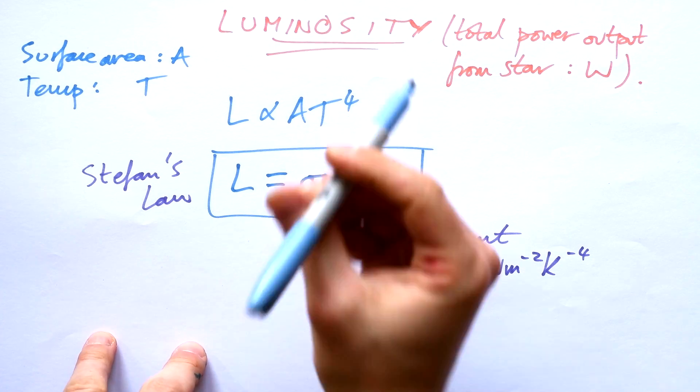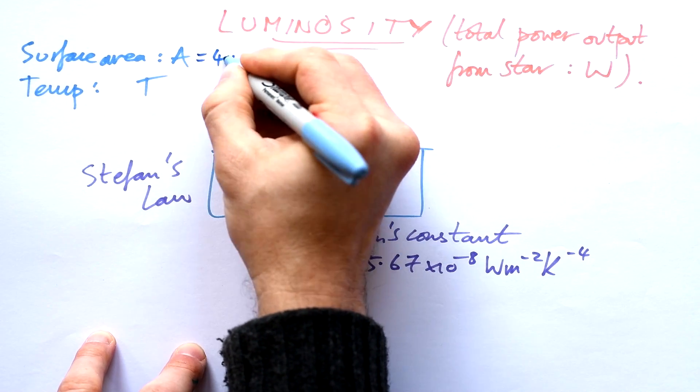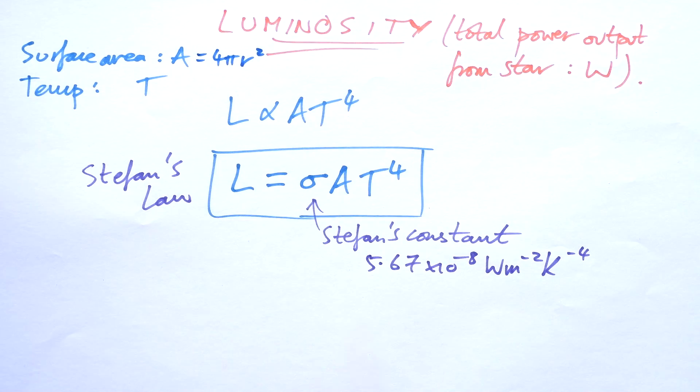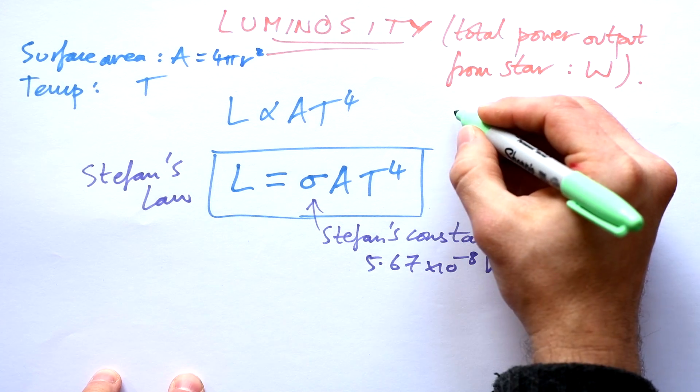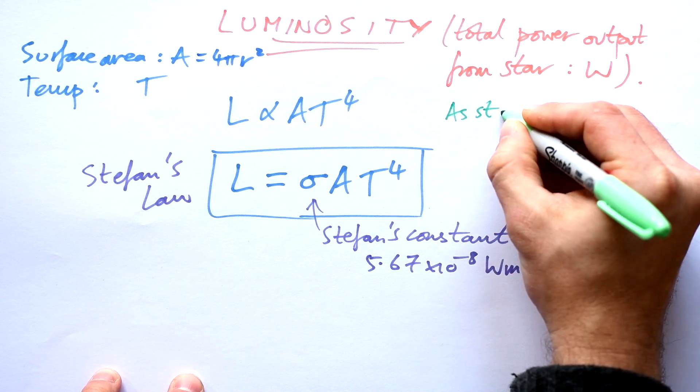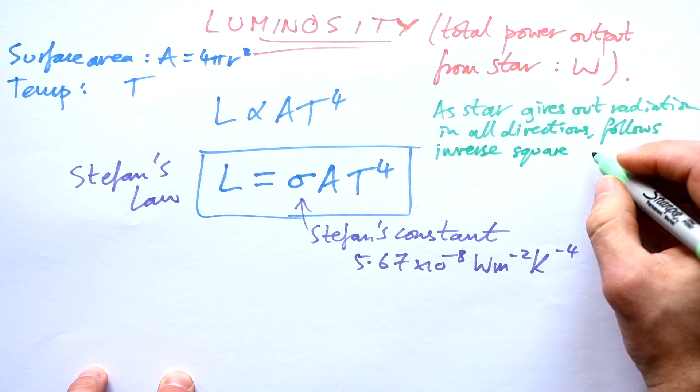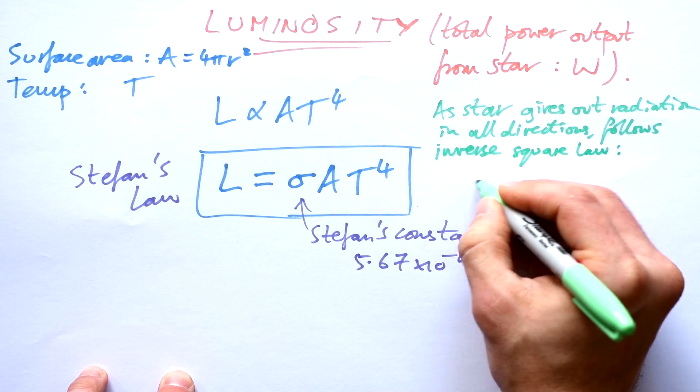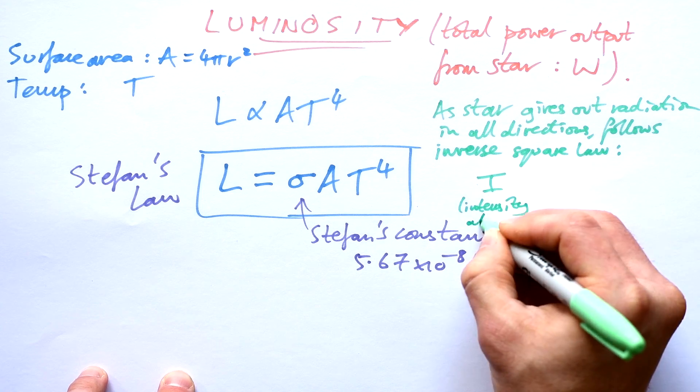Surface area of a sphere, well that's equal to 4πr squared. That's the radius of the star, so you can substitute that in for A as well. And we know that as a star dishes out radiation in all directions, it therefore follows the inverse square law.